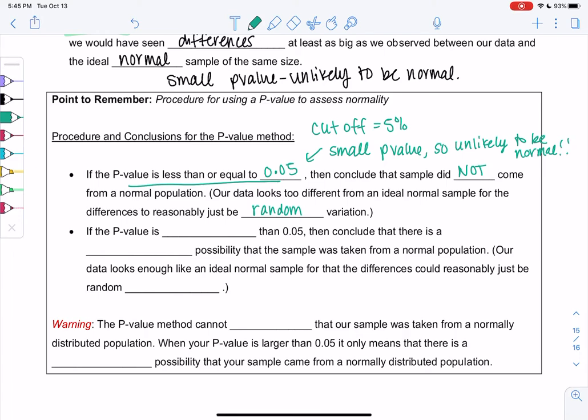The opposite is when it's greater than 0.05 is when we say maybe it could be normal still. If the p-value is greater than 0.05, then conclude that there is a reasonable possibility that the sample was taken from a normal population. Our data looks enough like an ideal normal sample that the differences could reasonably just be random variation. So it still doesn't tell us that it's normal for sure, it just tells us that it's possible.